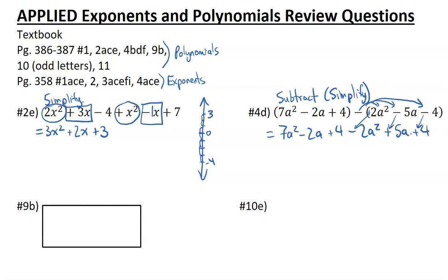Now we can combine the like terms, remembering to include the sign in front. We have 7a squared minus 2a squared. We're just subtracting the coefficient. 7 minus 2 gives me 5a squared. Now we have negative 2a and positive 5a, which gives me plus 3a. And then we have 4 plus 4, that gives me 8. So you've subtracted that and you've simplified it.